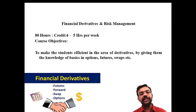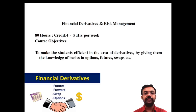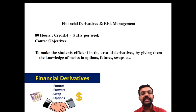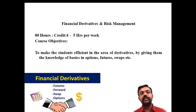In order to reduce risk, we use the term derivative. There are basically four categories of derivatives: futures, options, forwards, and swaps. These are the important categories of derivatives relating with risk management. The objective is to make students efficient in the area of derivatives by giving knowledge of these basic instruments.